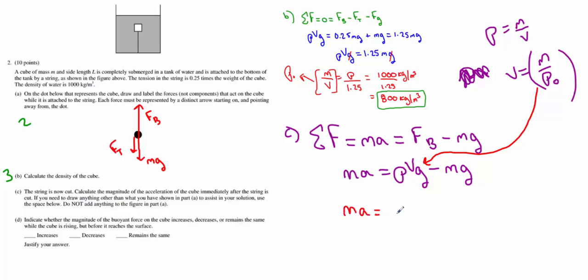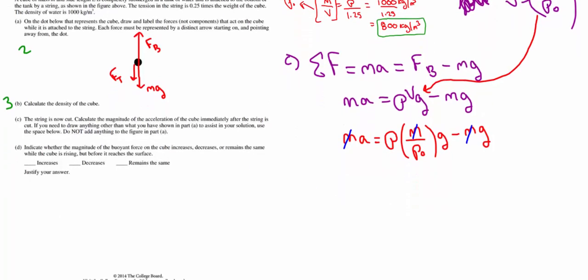So I have MA is rho of the fluid times the mass of the object divided by the density of the object times G minus MG. Since M is common in all three terms, I can get rid of those. And I see here that the acceleration is equal to the density of the fluid, 1000, times gravity, 10, divided by the density of the object, 800, minus 10.